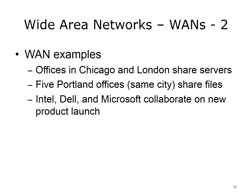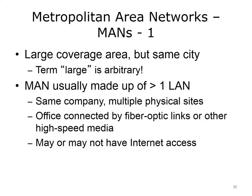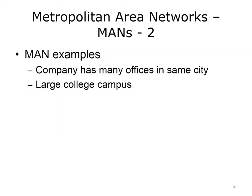Why would companies join together to create a WAN? A WAN can facilitate intercompany communications, permitting companies to share confidential documents. If a large network is comprised of five offices spread across the same city, the network is referred to as a Metropolitan Area Network, or MAN. A MAN is like a WAN, usually consisting of at least one LAN. An example would be a company with multiple physical sites, with one site connected to the main office by fiber-optic links or other high-speed media. The MAN, just like the WAN, may or may not have internet access for its devices. Examples of MANs include a company with many offices in the same city or a large college campus.